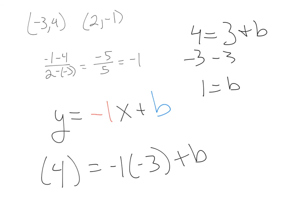So I can rewrite this equation with instead of a b, I can write it as y equals negative x, which is the same as negative 1x, right, plus 1. And that would be the finished form of my equation, slope-intercept form.